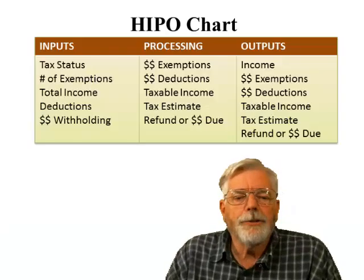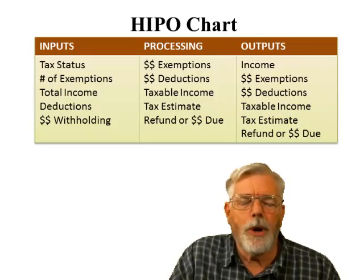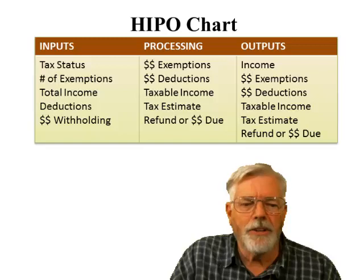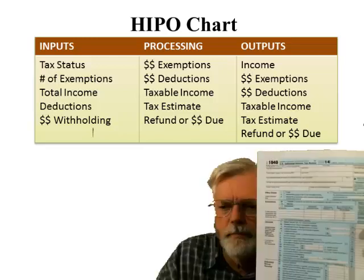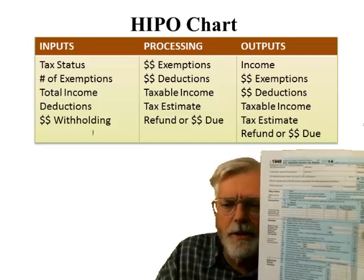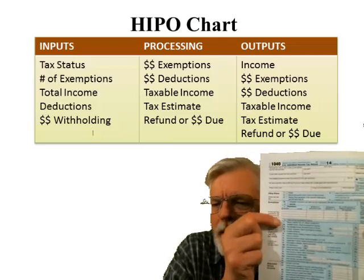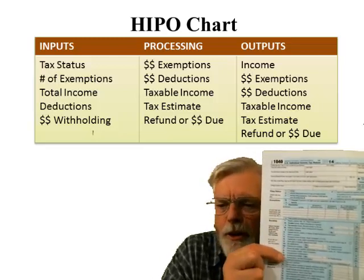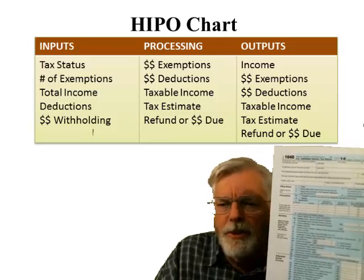Let's analyze the program using a HIPO chart — hierarchical input process output. The inputs I want are: tax status, number of exemptions, total income, deductions, and the amount of withholding. If you were filing a 1040, the total income would be computed by adding up all the relevant items. The number of exemptions is entered at the top.